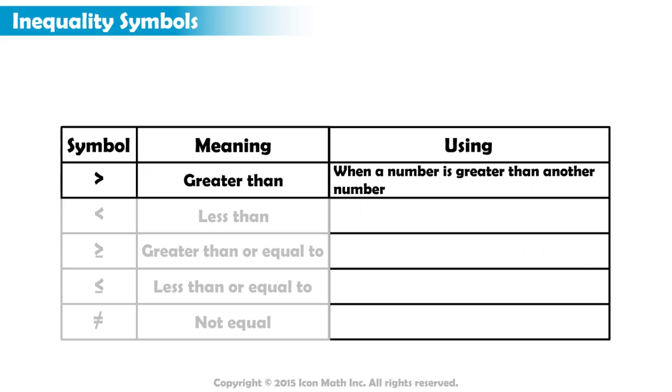Let's begin with the greater than symbol. We use this symbol when we want to say that one number is greater than another number. For example, 10 is greater than 5.